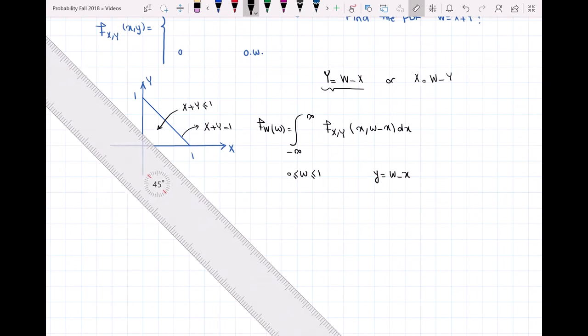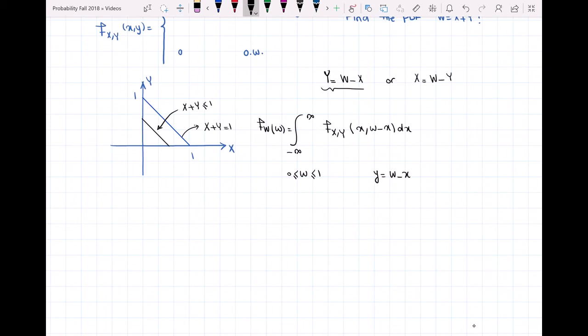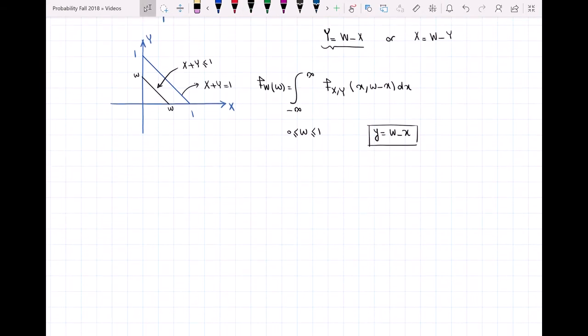I can also draw the line Y equal to W minus X. When X is 0 in this function, Y equals W, and when Y is 0, X equals W. We can see clearly that W varies between 0 and 1.